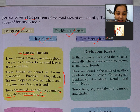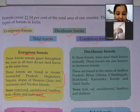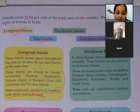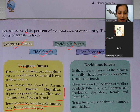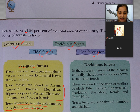Deciduous forests are those in which trees shed their leaves annually, once a year. These forests are also known as monsoon forests. They are found in states of Andhra Pradesh, Bihar, Orissa, Chhattisgarh, Jharkhand, Karnataka, Kerala and Tamil Nadu.